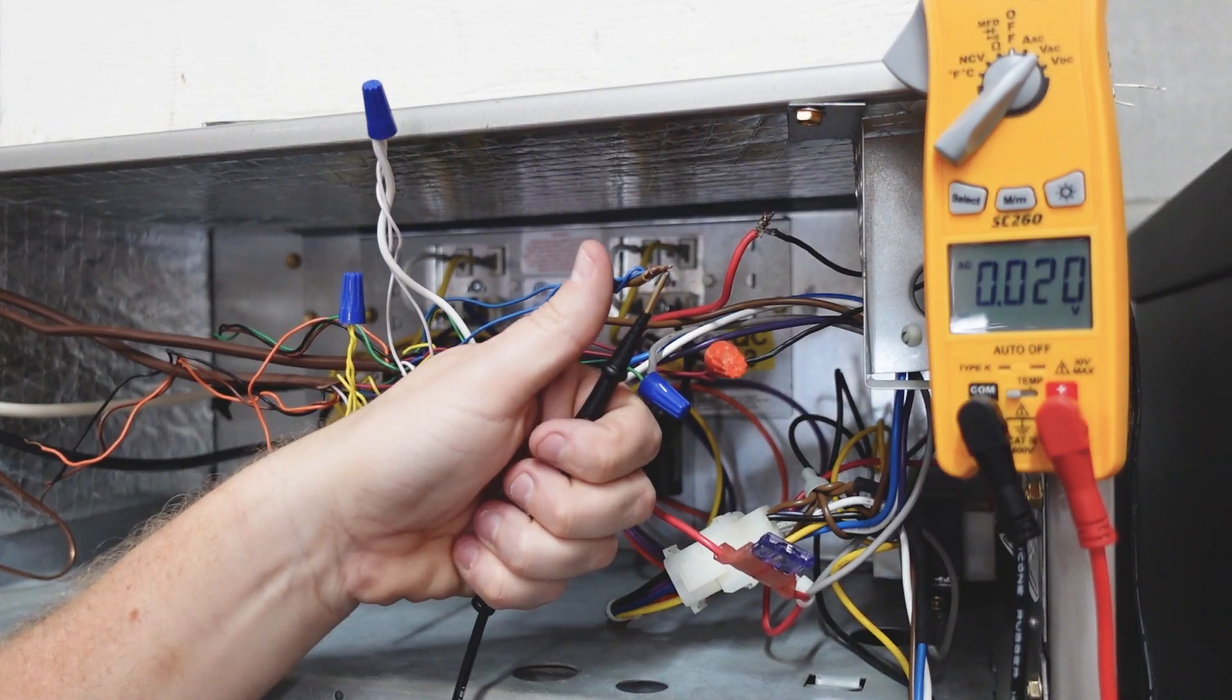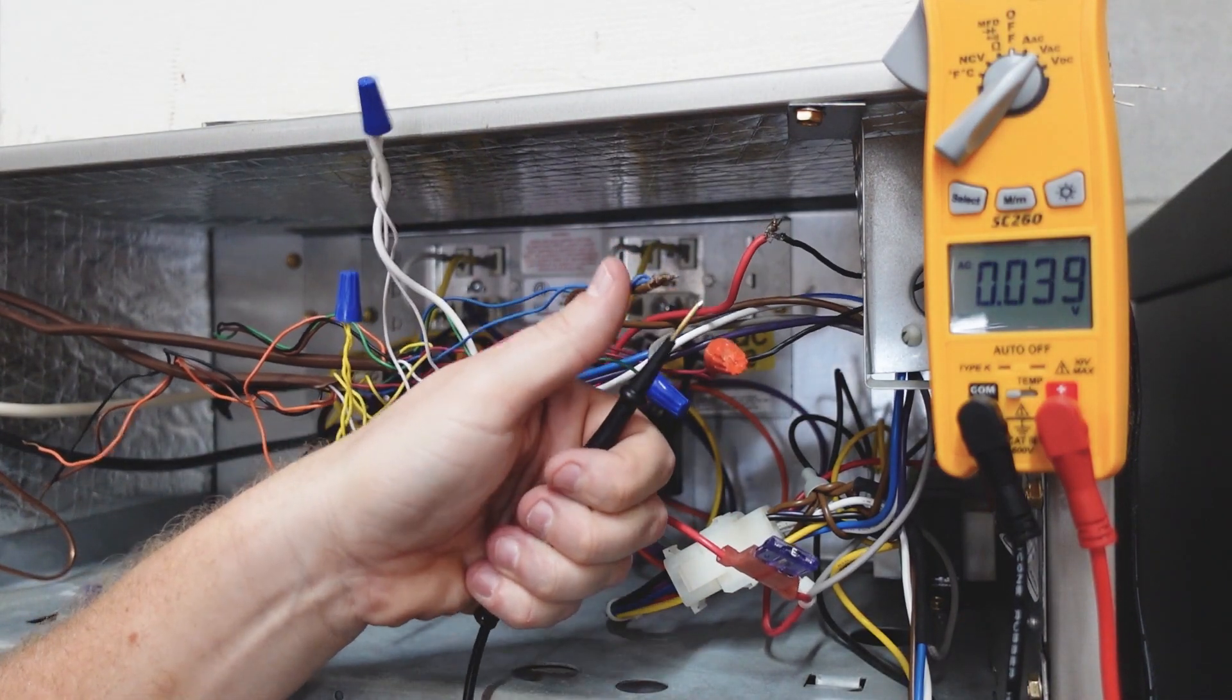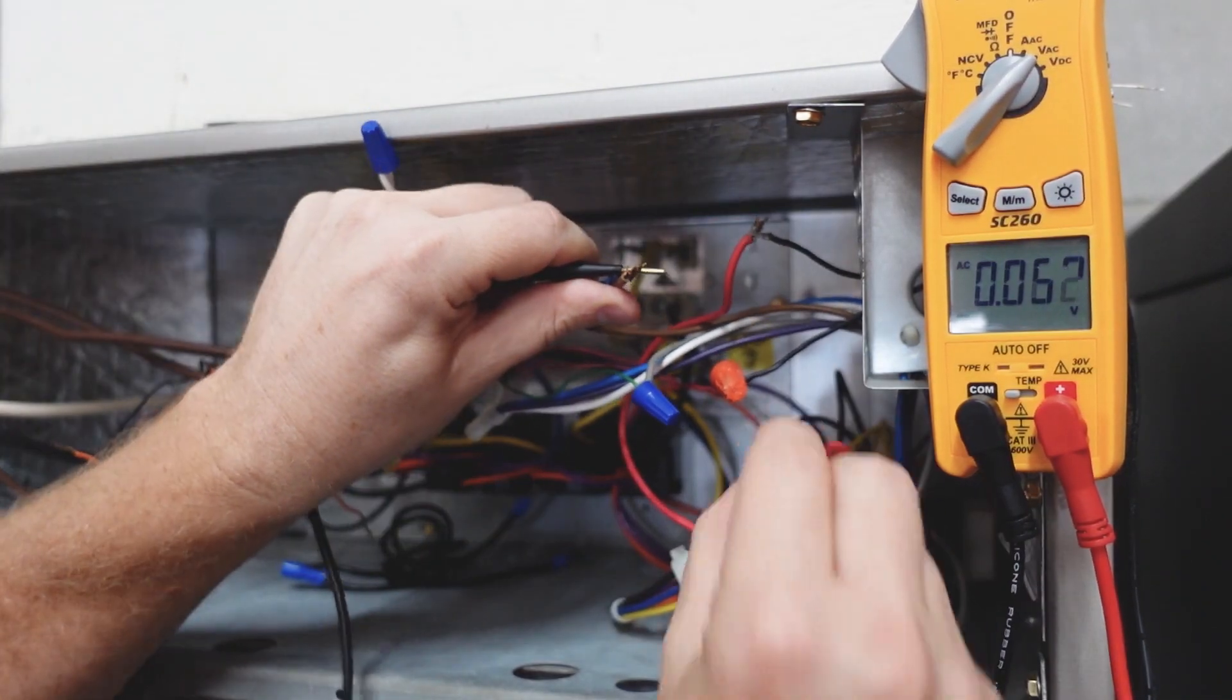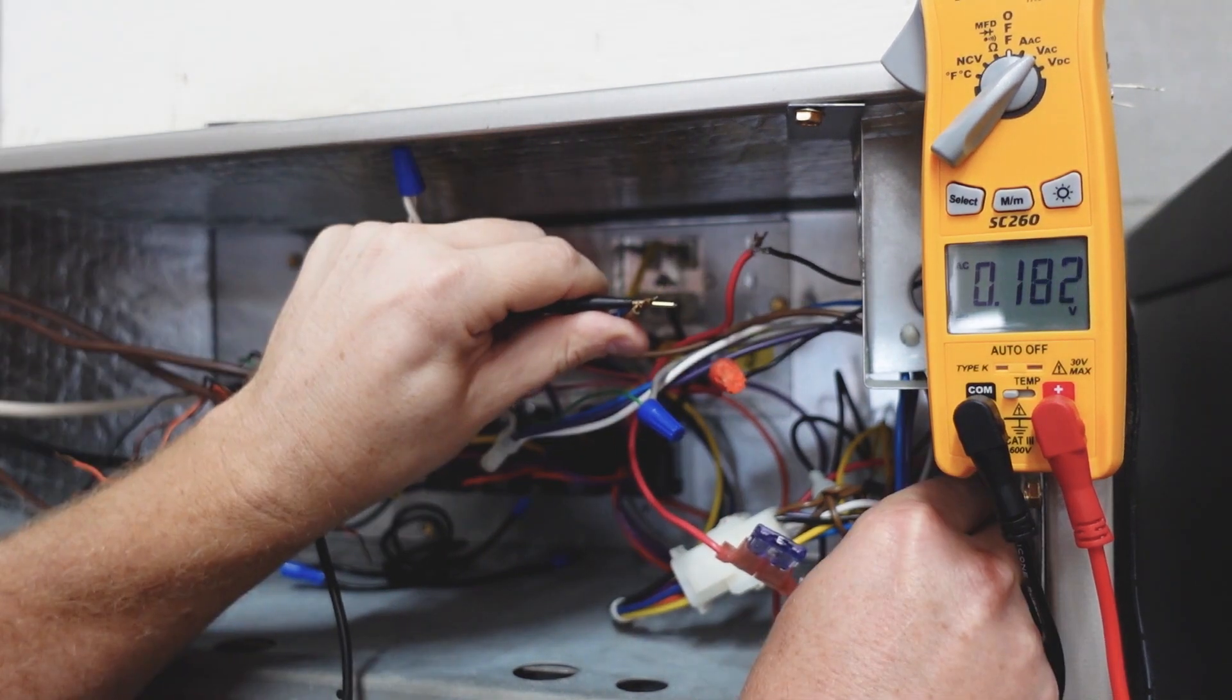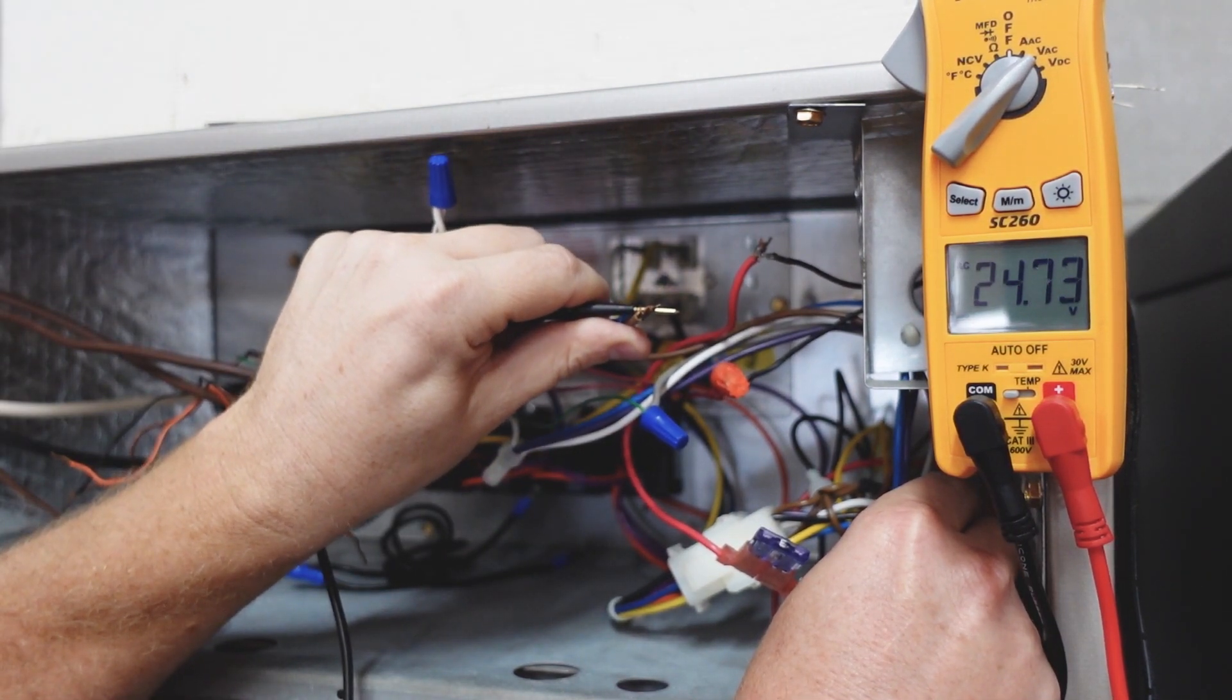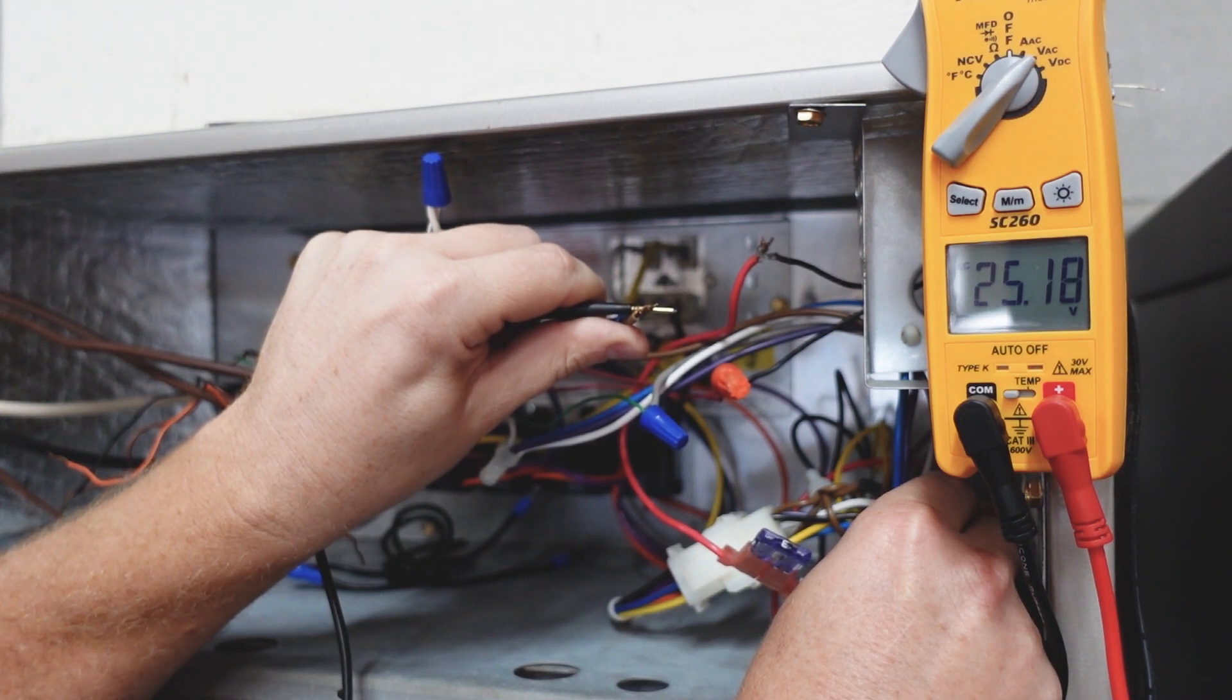So let's just see what we have. I measure from brown, which is common, coming from the transformer. And I go all the way back in and I measure from our hot, getting good access points is the tricky part for this test. So now I'm going directly from red to common on the transformer and I have 25 volts.